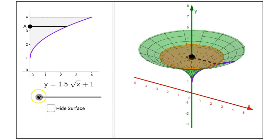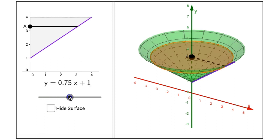Unchecking the checkbox and sliding the slider to the right, our second function we will explore is y equals 0.75x plus 1. The graph is shown on the left side of the interactive figure, graphed from y equals 1 to y equals 4.